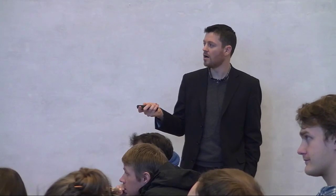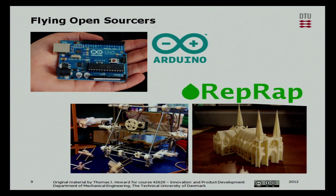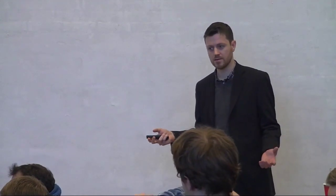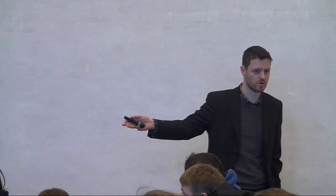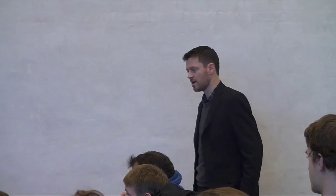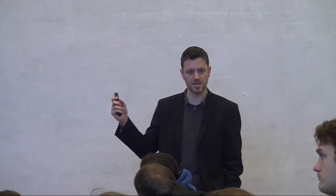RepRap is an open source, open design 3D printer. It essentially prints structures in several different materials. Because it's completely open source, you can download the blueprints off the internet, work out how to assemble it, buy some standard components and make one yourself. You can then download the CAD files for all the RepRap parts and print off a set for someone else, who can make their own printer. It works out to under 4,000 crowns to have your own 3D printer, and it interfaces with standard CAD packages.